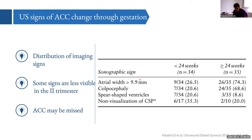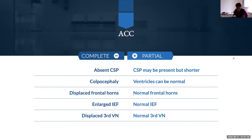Why is corpus callosum agenesis so frequently missed? As shown in a seminal paper by Professor Paladini, the ultrasound signs change through gestation. Signs such as colpocephaly and non-visualization of the cavum septum pellucidum are actually less frequent in the second trimester than in the third trimester, so they are not always easy to detect at the time of the routine anomaly scan, becoming more obvious with ongoing gestation. In complete agenesis the cavum septum pellucidum is absent, whereas in partial agenesis it may still be visible, making the signs more subtle.